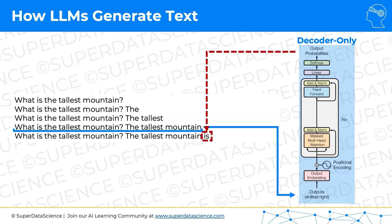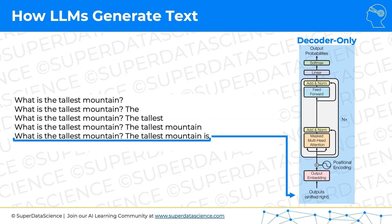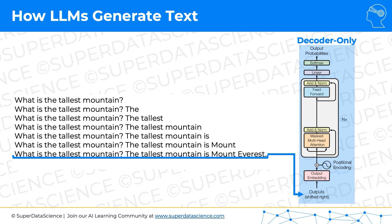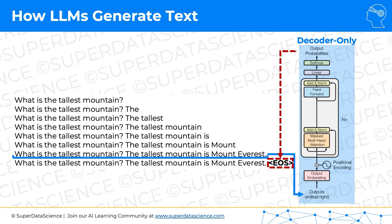So that goes in, we get the next word: "the tallest mountain," "the tallest mountain is," "the tallest mountain is Mount," "the tallest mountain is Mount Everest." And then this still goes into our decoder-only model — the large language model — and then we will get an end-of-sequence token. The end-of-sequence token is a signal to the large language model to stop generating text, that we've come to the end. And so there we go, that will be our final output. We've asked: what is the tallest mountain? And the final output is: the tallest mountain is Mount Everest, end-of-sequence.